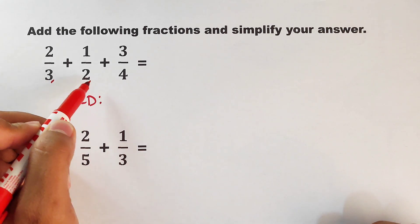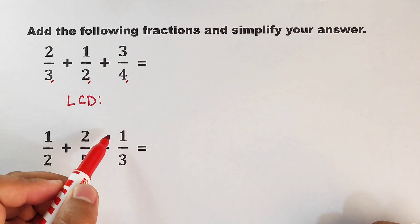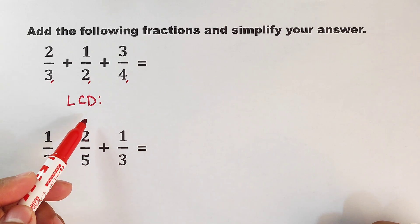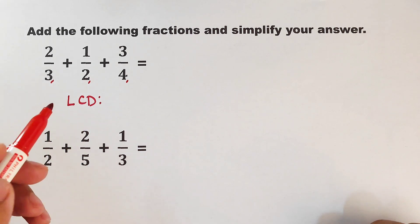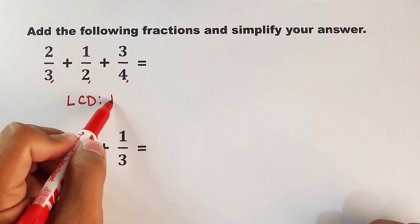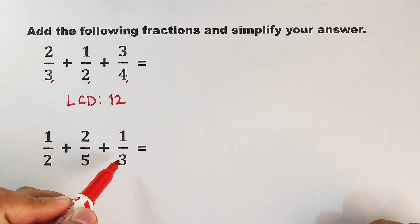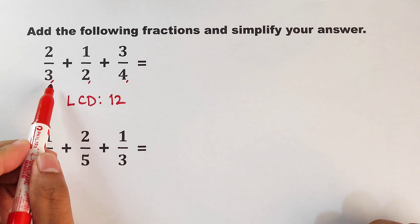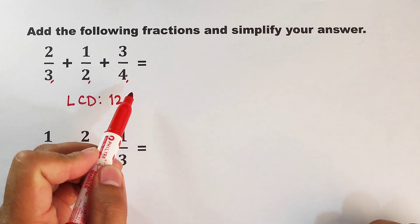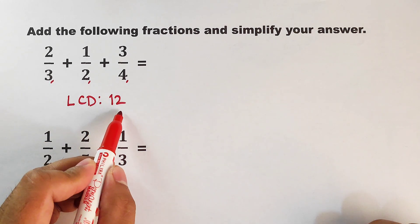We have here 3, 2, and 4. The LCD between these three numbers is simply equal to 12. So right now what we're going to do is we will multiply each denominator by a certain number to make it 12.